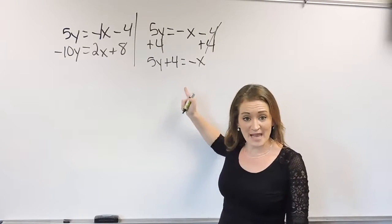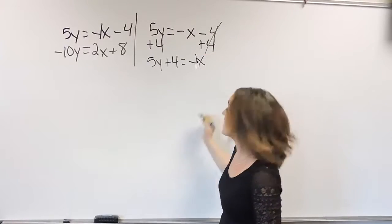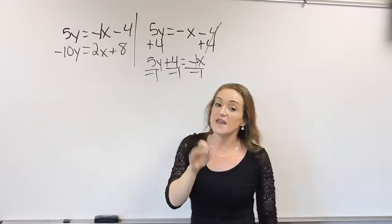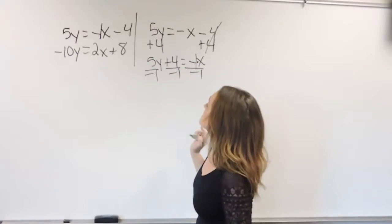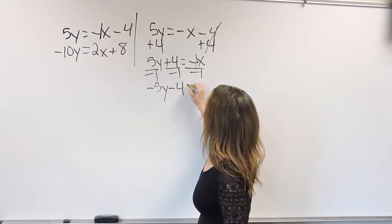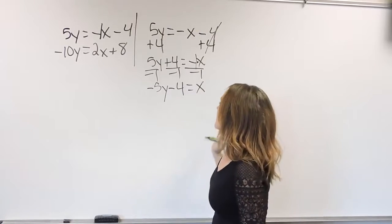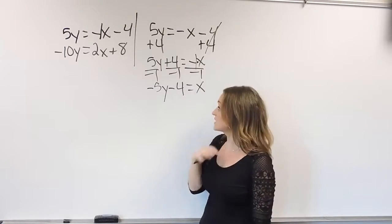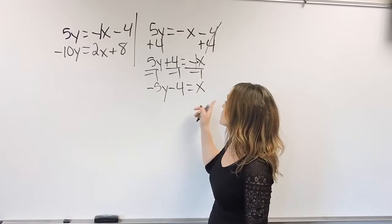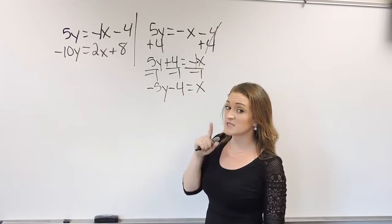Just need to get rid of that negative right there in front of the x. So remember, that's like saying negative 1 times x. So we do the opposite by dividing out that negative 1, leaving us with negative 5y minus 4 is equal to x. Now, here we need to pause a little bit and realize what we have here. So we have one of our equations solved for x. So x is equal to negative 5y minus 4.